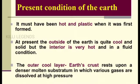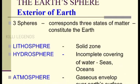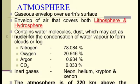First, the earth was very hot and plastic, but now the outer surface has cooled. We will see the earth's spheres. There are three spheres — in schools we learn in geography about these three spheres: lithosphere, hydrosphere, and atmosphere. The lithosphere is the solid zone, the hydrosphere is water, and the atmosphere is gaseous in nature.